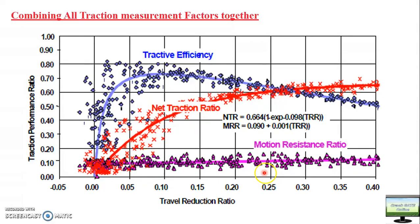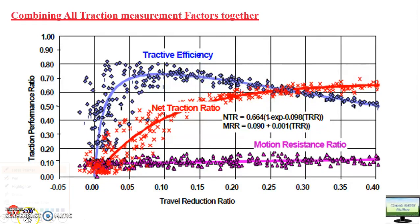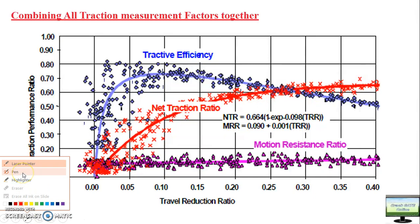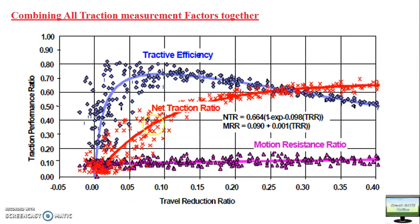The motion resistance ratio will not vary with slip because it is a function of self-weight and other factors explained in previous videos - therefore it is constant with respect to slip. The net traction ratio will start increasing with slip, obtain a maximum value, and then become constant after a particular amount of slip. Tractor efficiency will increase to a maximum value and then start decreasing.